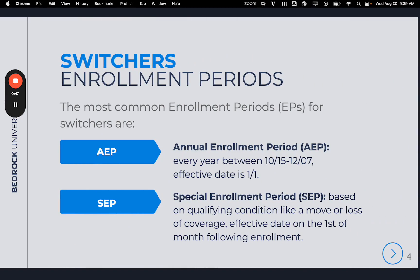Switchers — Enrollment Periods. The most common enrollment period, or EP, for switchers is AEP, the Annual Enrollment Period. This occurs every year between October 15th and December 7th; any plan selected will take effect on January 1 of the following year. The other is SEP, or Special Enrollment Period, which is based on a qualifying condition like a move or loss of coverage. The effective date takes place on the first of the month following their enrollment or application.